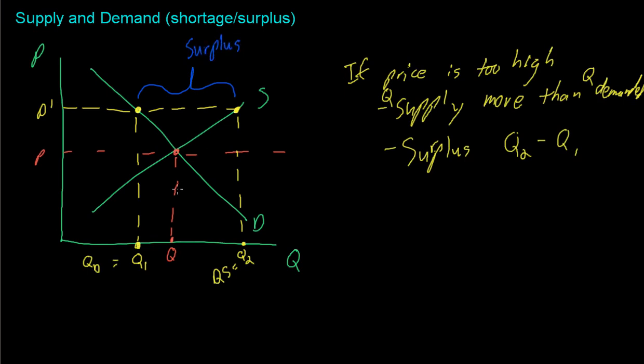Now what would happen if we fix price too low? Well if we fix price too low, say down here at P2, and then we'll just go over right here, then we would get a shortage.